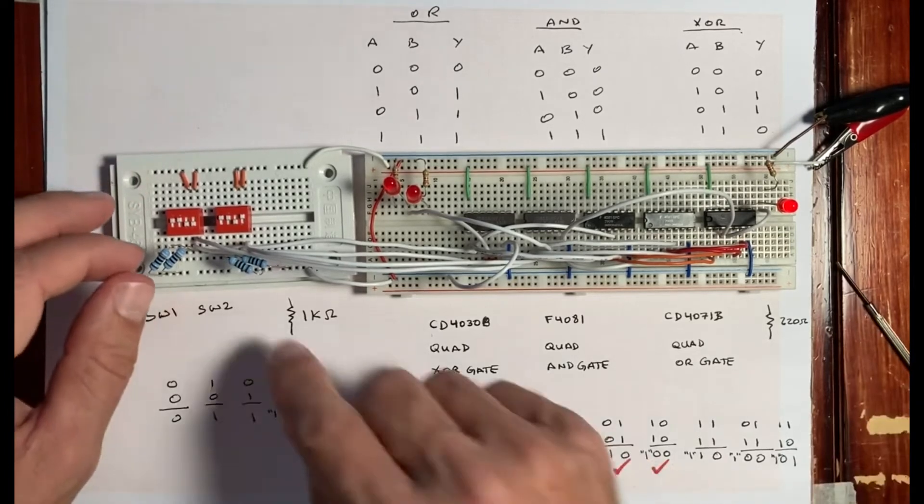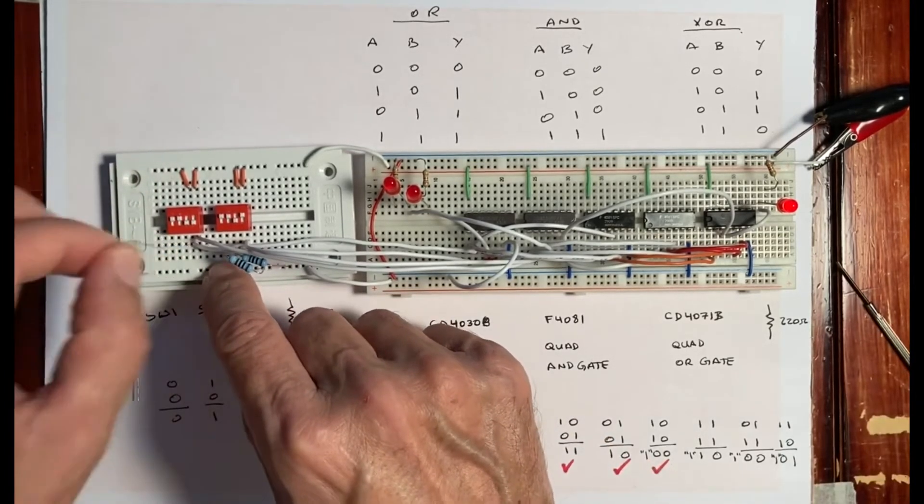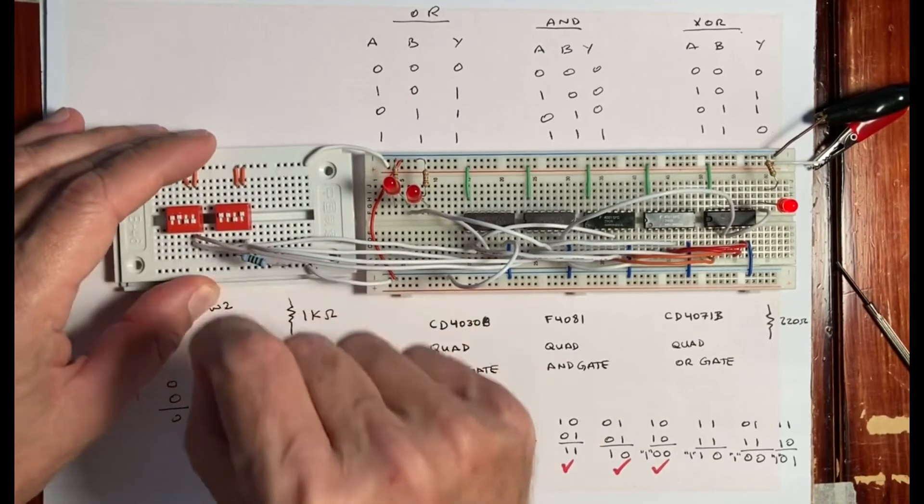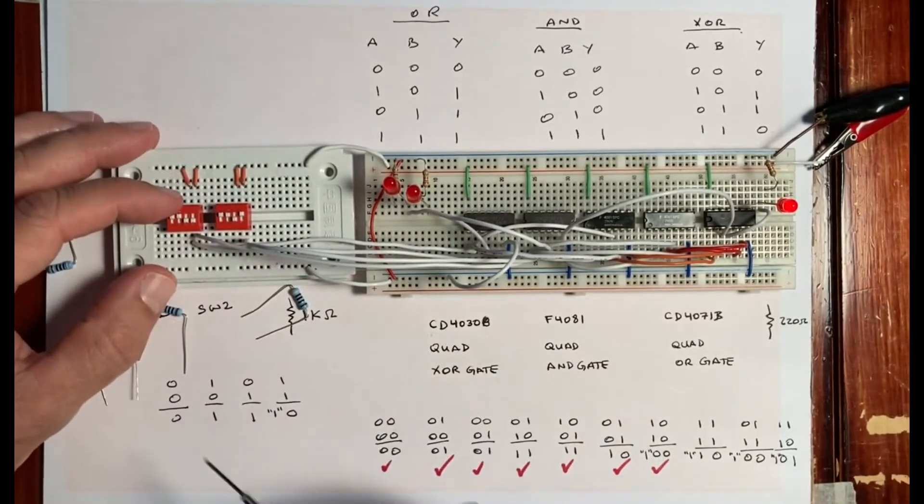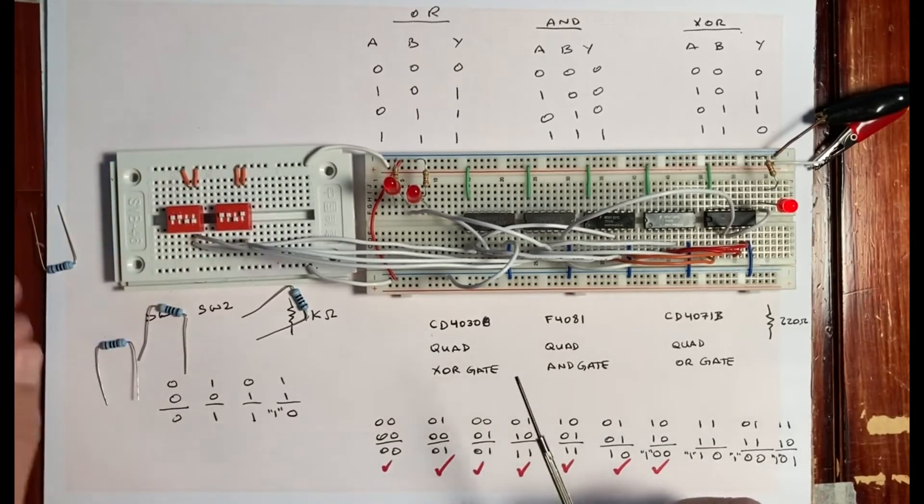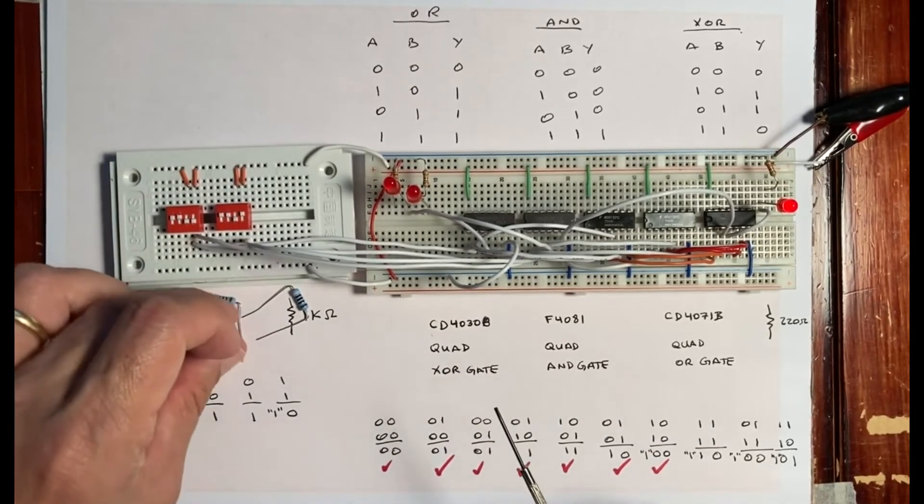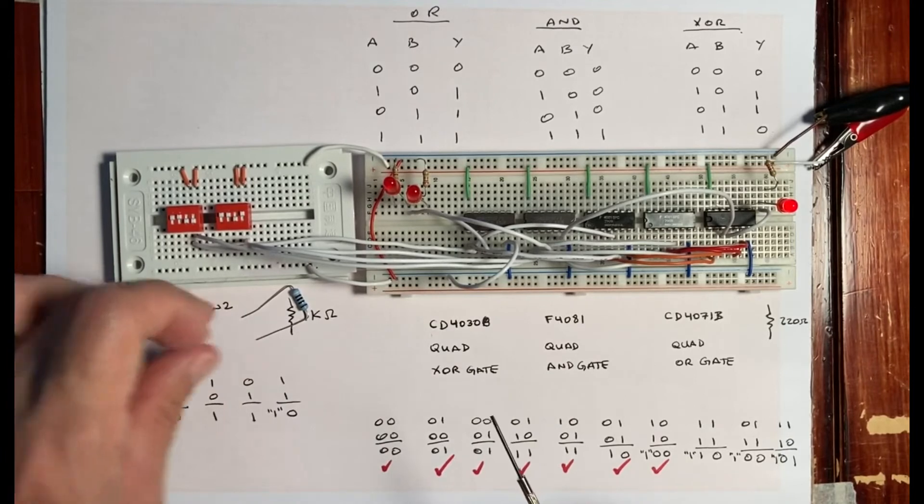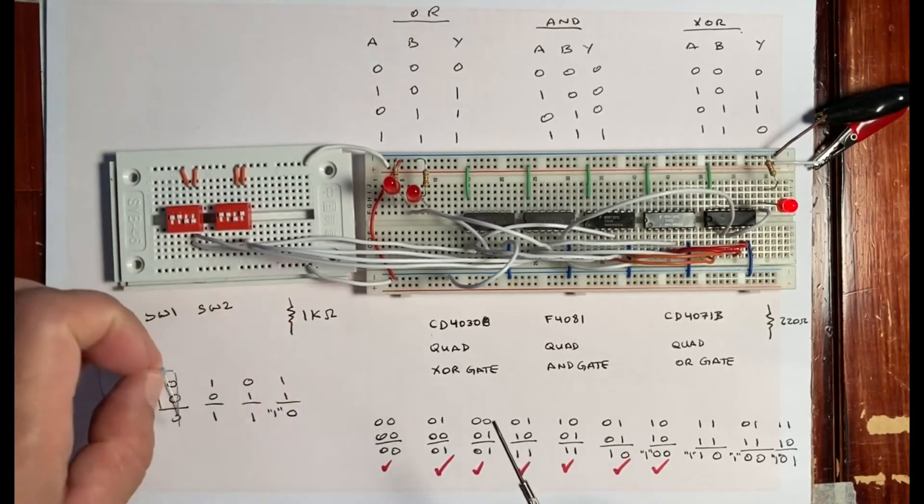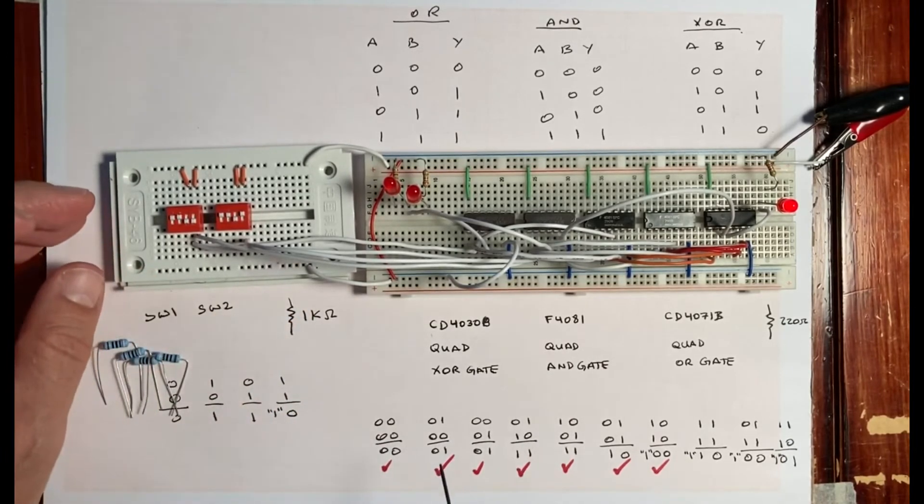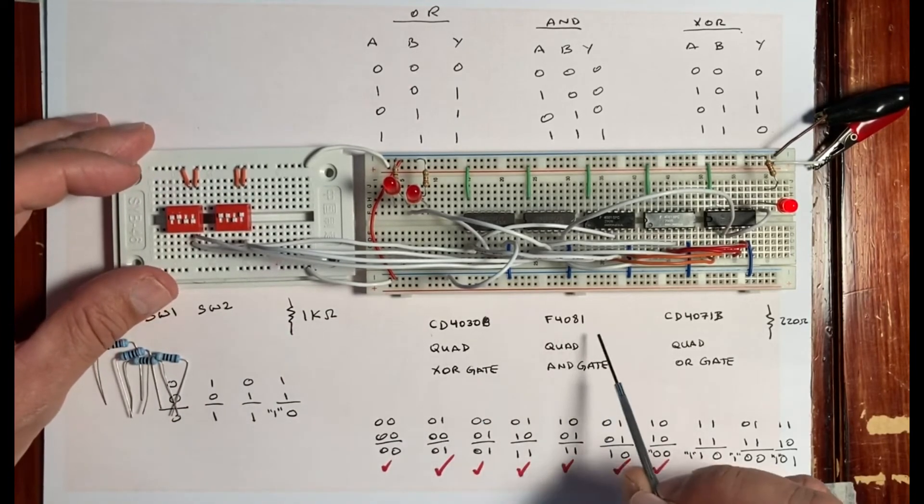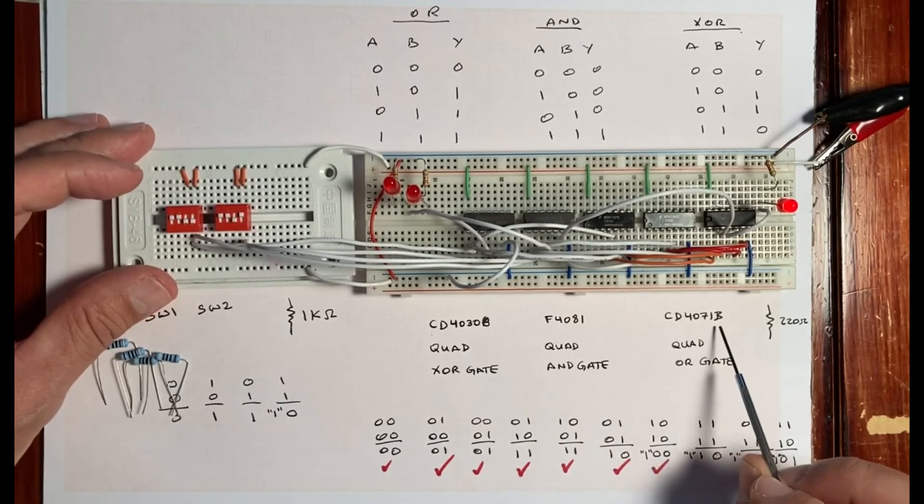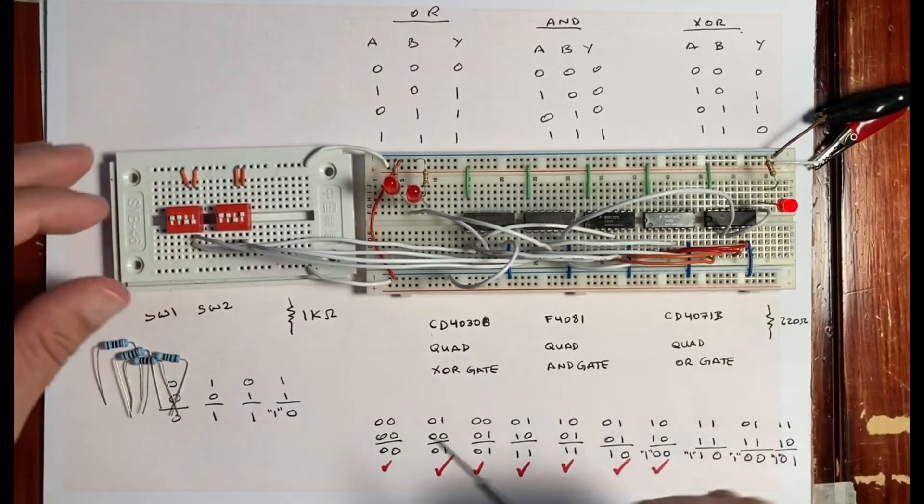Okay so now we start taking off the resistors. See if we get any response to this. Some of these chips I found written on the web have internal resistances, like the 74xx series apparently, which these are not. These are the CD4030, F4081 and CD4071. I don't know if they have a resistor or not.